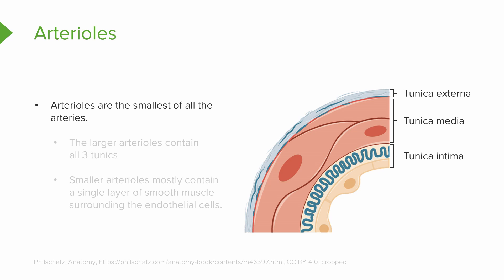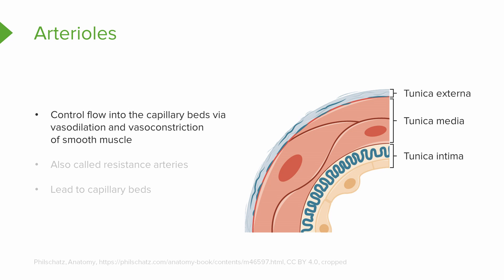The last type of artery, and the smallest of our arteries, are going to be our arterioles. Our larger arterioles contain all three tunics, but as they get smaller in size and diameter, they end up being mostly a single layer of smooth muscle surrounding endothelial cells. The arterioles are going to control flow of blood into our capillary beds via vasodilation and vasoconstriction of their smooth muscle.